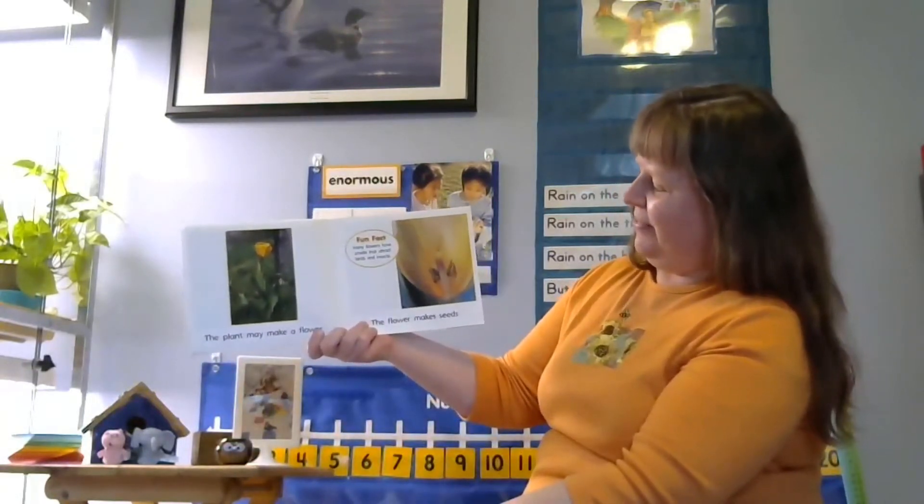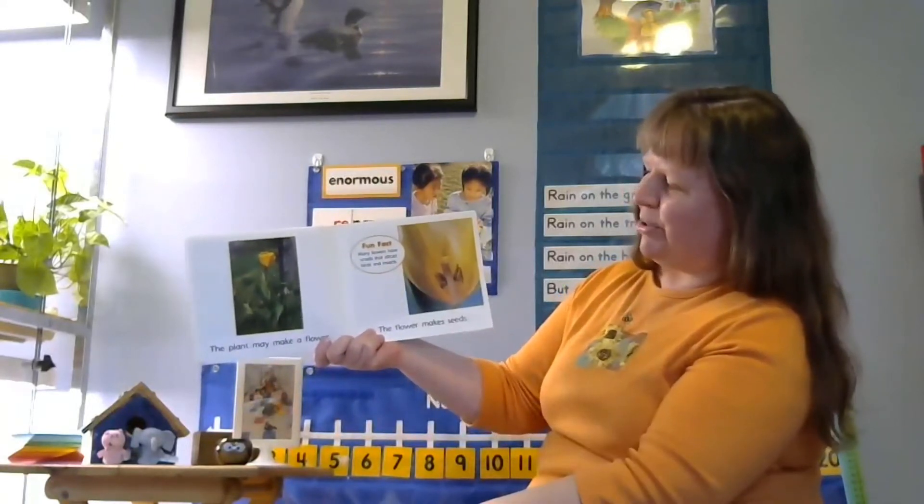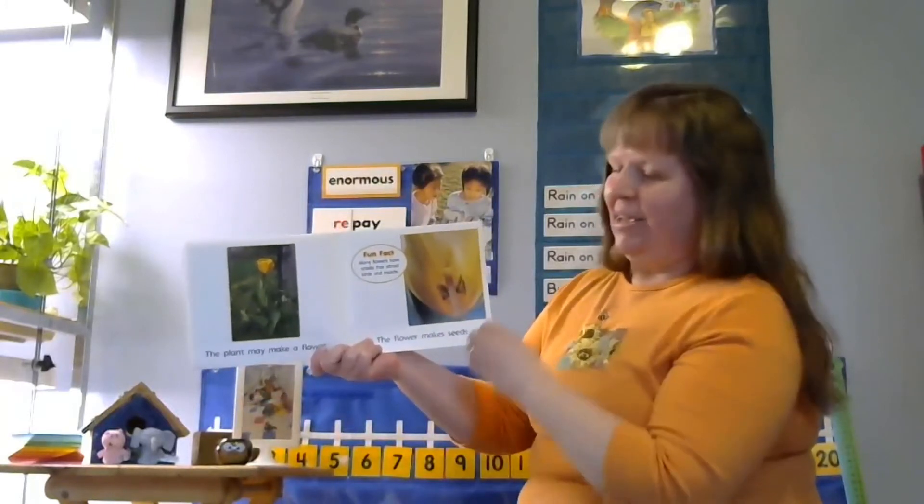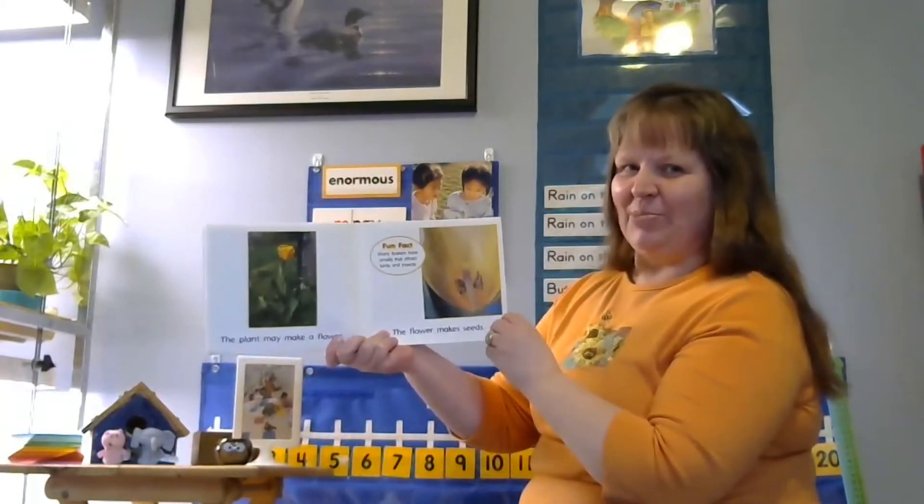The plant may make a flower. The flower makes seeds. It says many flowers have smells that attract birds and insects. Now we don't have any flowers up like this just yet. This is a tulip and they'll come up a little bit later in the spring. But I did notice in my yard a few kinds of flowers that come up early spring are starting to come up.